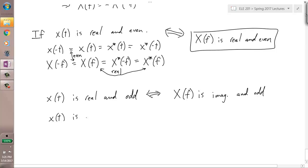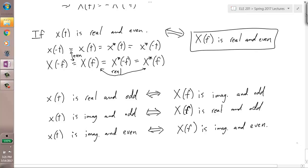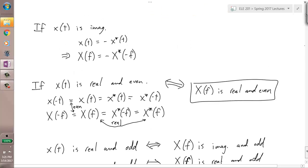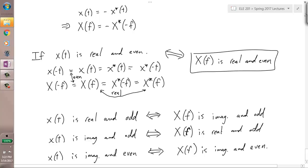If X of T is imaginary and odd, that equates to the frequency domain being what? What do you think? Think duality here. Duality means that we should have kind of reverse statements holding. We had imaginary and odd on the right in the previous statement. We've got imaginary and odd on the left here. So we should have that this is real and odd. And the final one is if X of T is imaginary and even, then we get that X of F is imaginary and even. So no change.